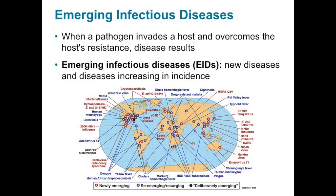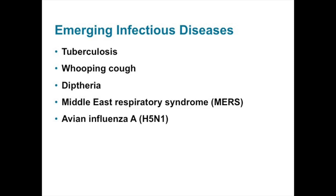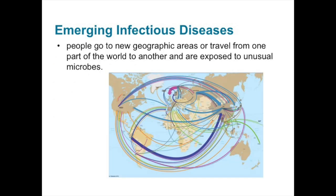In spite of many effective chemotherapeutic drugs, infectious diseases are not only not disappearing, but seem to be re-emerging and increasing. The breakdown of public health measures for previously controlled infections has resulted in the emergence of tuberculosis, whooping cough, and diphtheria. Antibiotic resistance is also adding to the problem of re-emerging diseases. Emerging infectious diseases are diseases that are new or changing, and their incidence is increasing as people travel to new geographic areas and are exposed to unusual microbes. Evolutionary changes in existing organisms have also contributed to the emergence of new diseases.